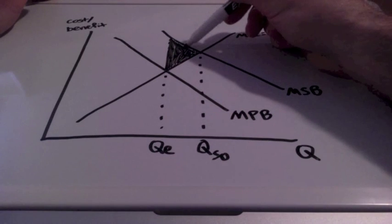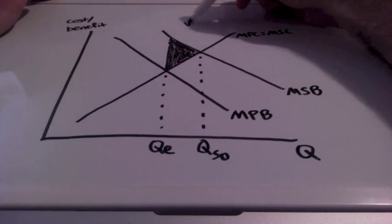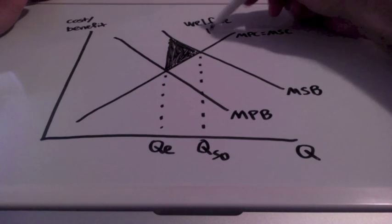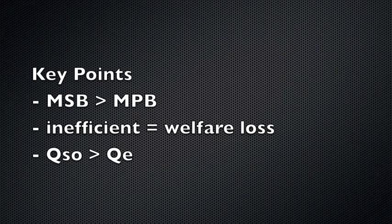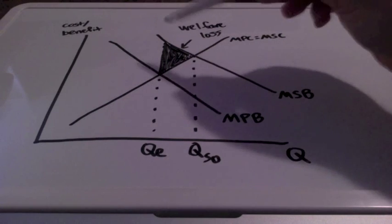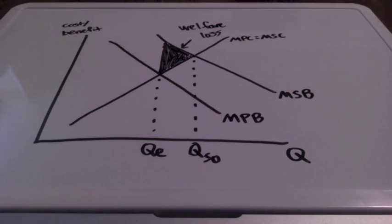We call this welfare loss. What can be done to correct this market failure, this inefficiency with this welfare loss?